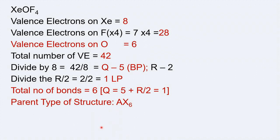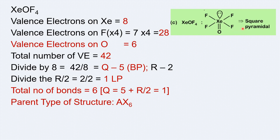With 6 total bonds, the parent geometry is AX6 type, which is octahedral. But since there is one lone pair of electrons, the octahedron becomes a square pyramidal geometry. The 4 fluorine atoms occupy the square base and the oxygen atom is at the apex like a pyramid. So the geometry of XeOF4 is square pyramidal.